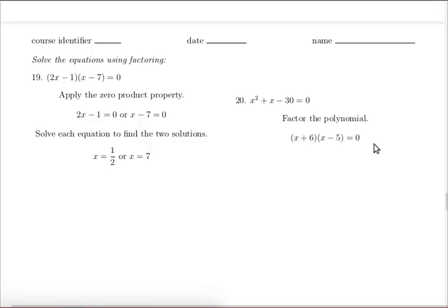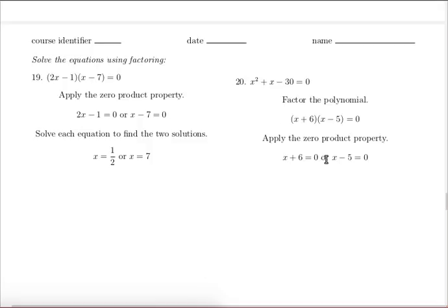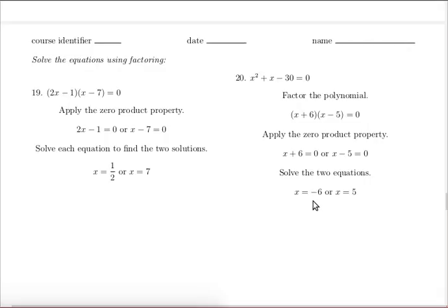So now we have an equation that we can apply the zero product property to. Either x plus 6 equals zero or x minus 5 equals zero. So now we can solve those two equations to get two solutions: x equals negative 6 or x equals 5.